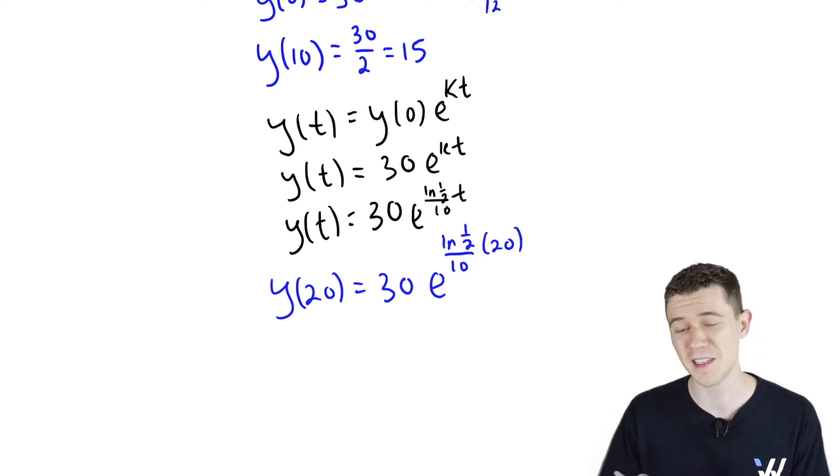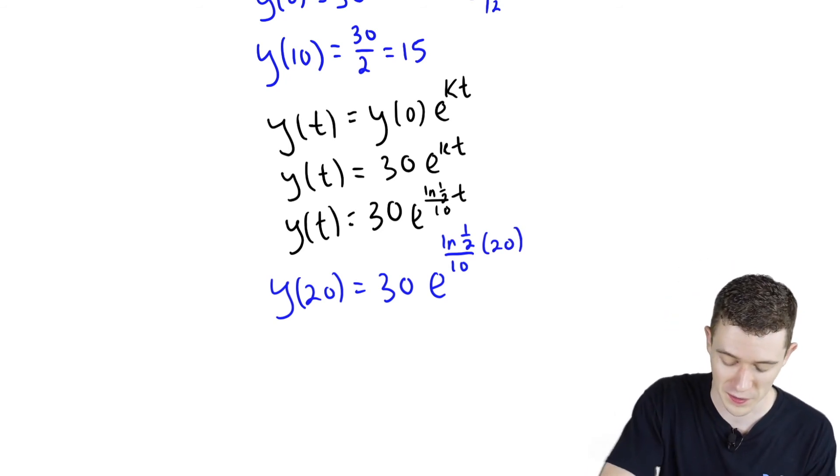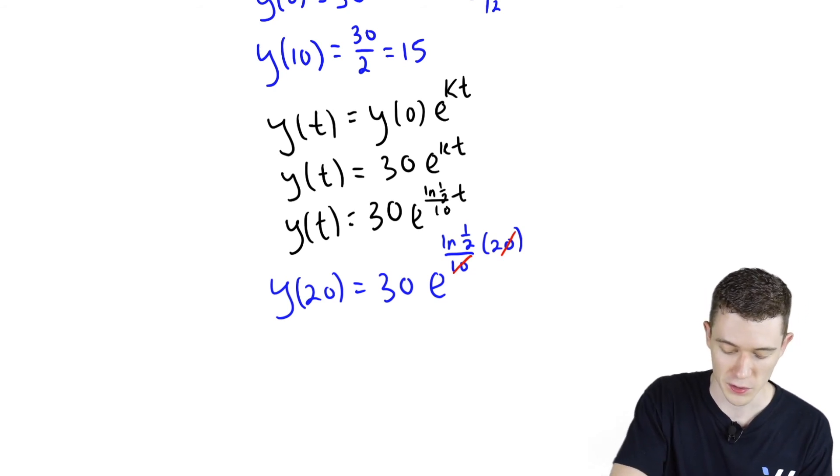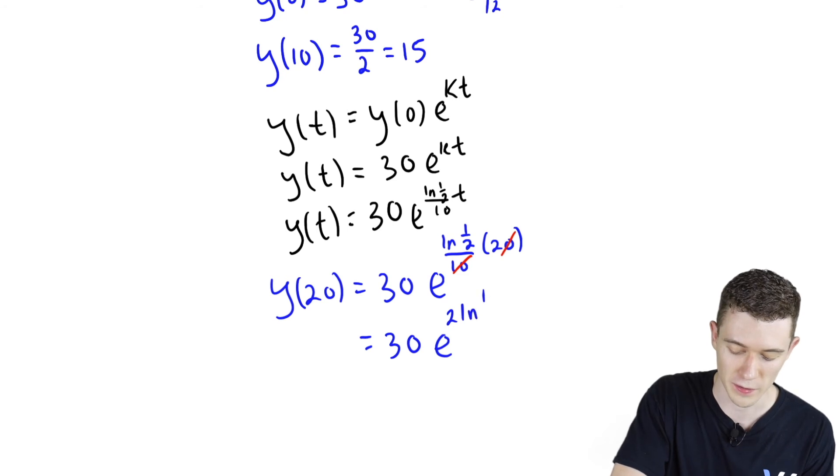And I think we can actually do a few nice things with properties of logarithms. Certainly, 20 over 10 makes 2. So, in the exponent here, we have e to the 2 natural log of a half.